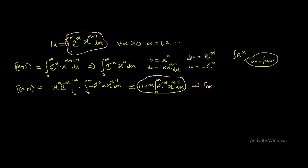It is safe to say that Gamma(alpha + 1) = alpha * Gamma(alpha). This conclusion follows because that integral is exactly Gamma(alpha). Please take note of this important result.